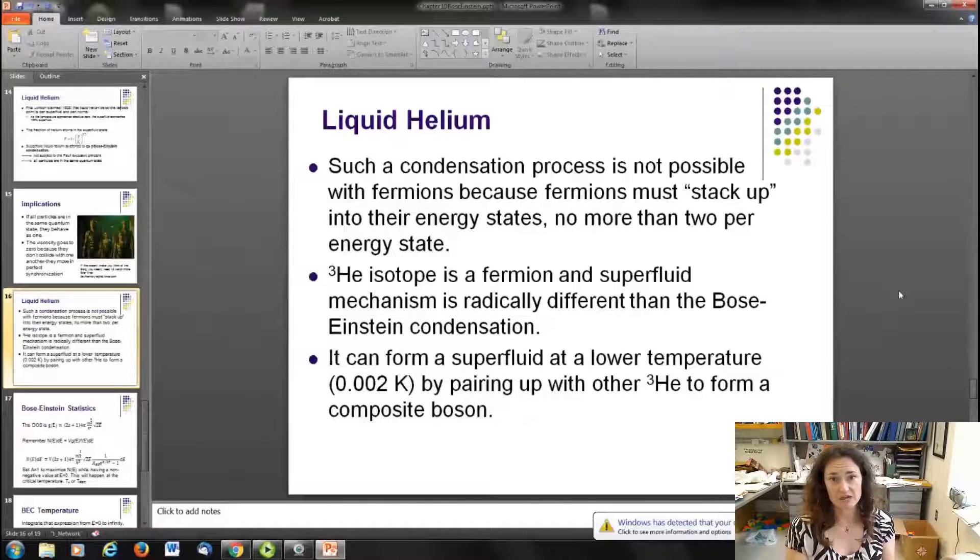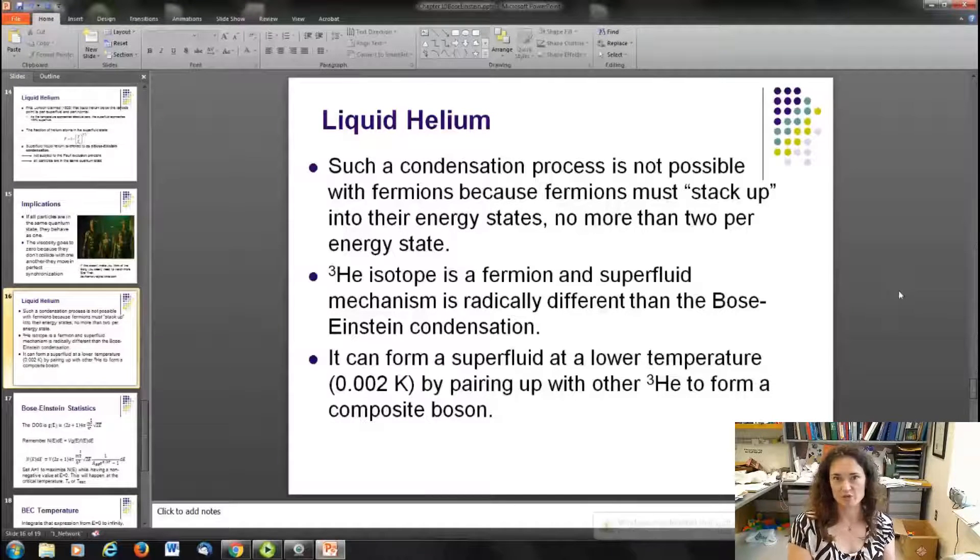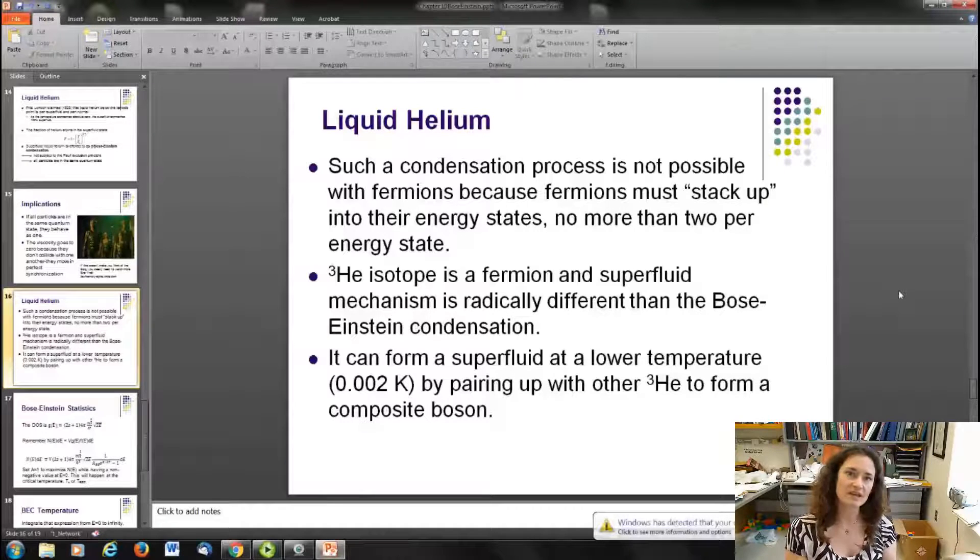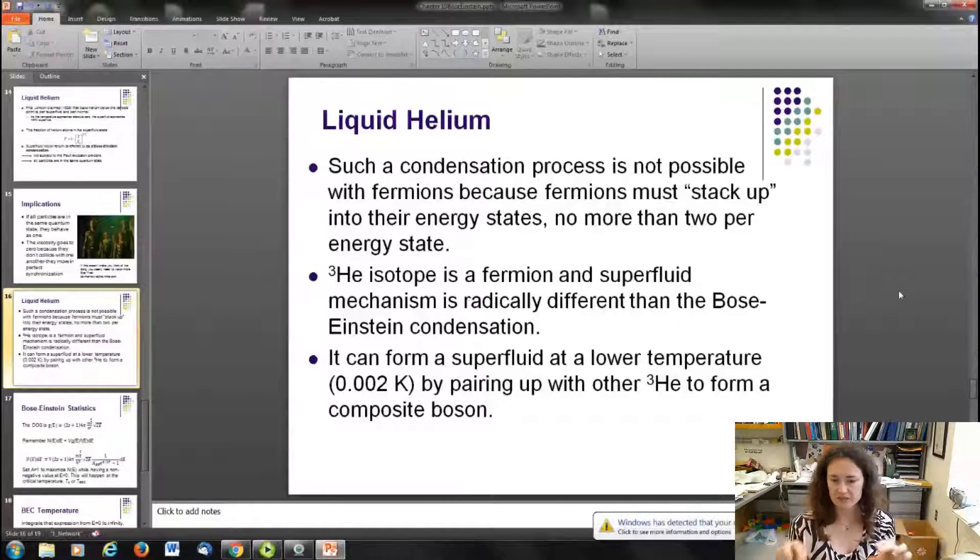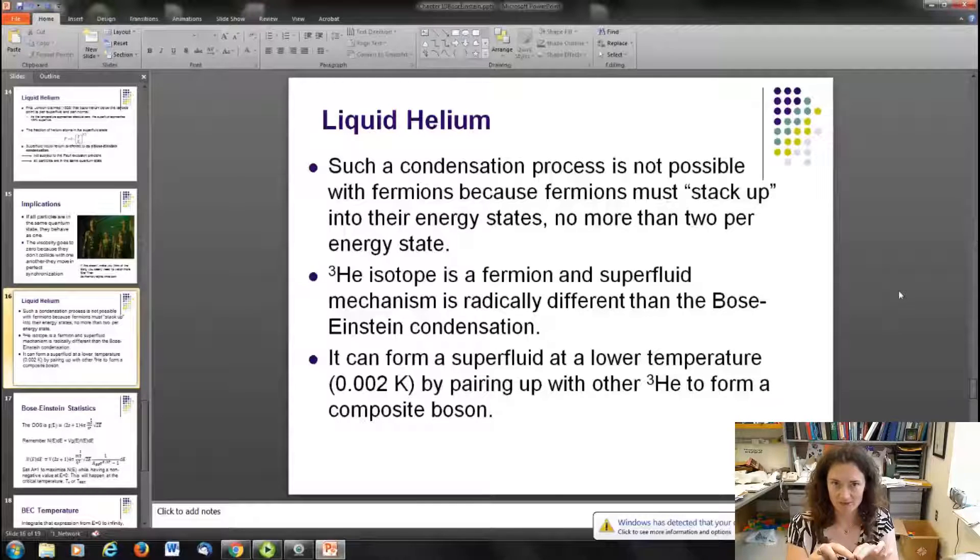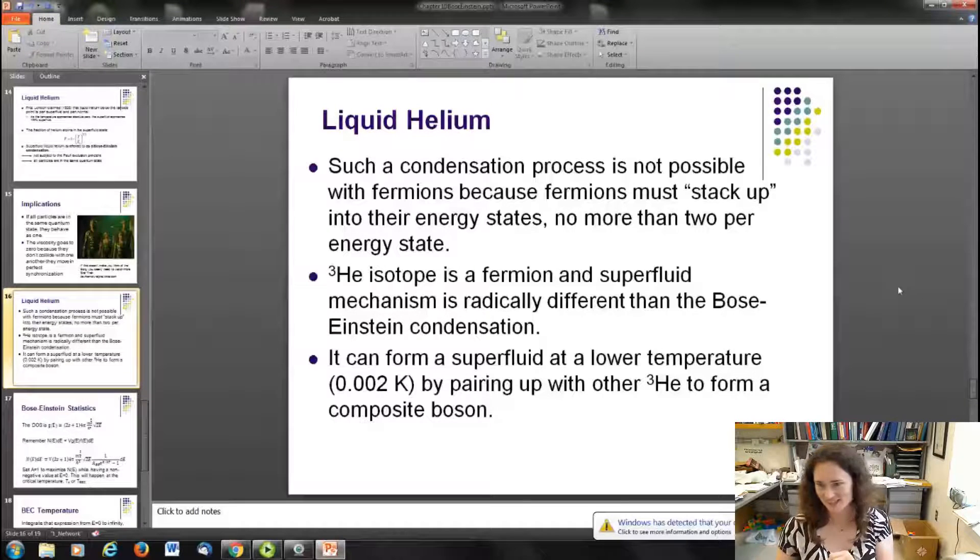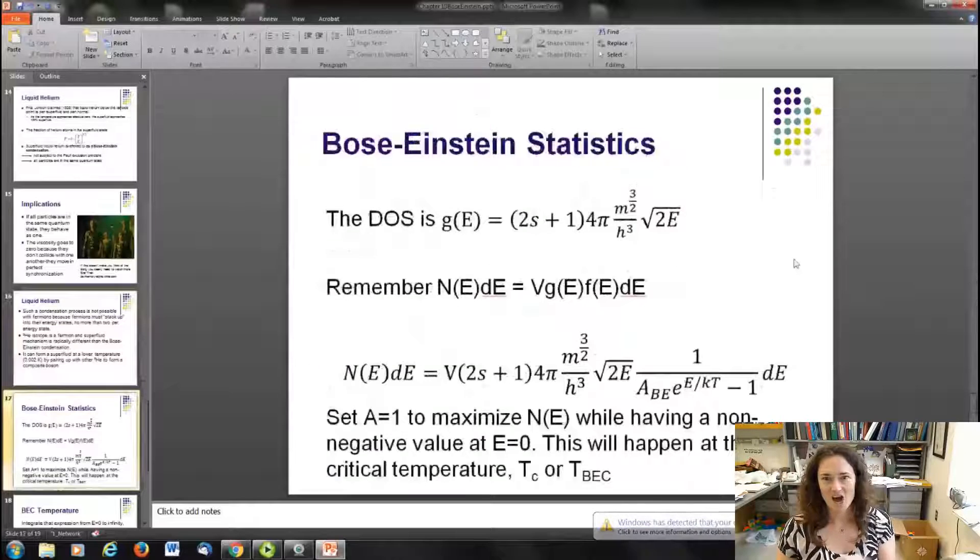It's interesting to note, though, that helium-3, even though it is a fermion, will become a superfluid itself, but at a much lower temperature, about two millikelvin. And the way that it can do that is if two helium-3s pair up, and then they add together to have a total integer spin. So it becomes a composite-composite boson, if you will. So it's pretty interesting.